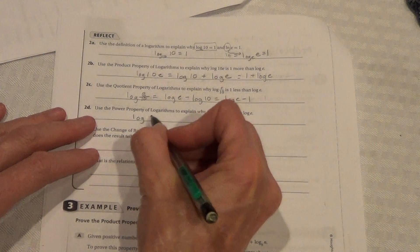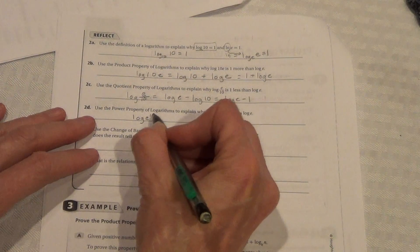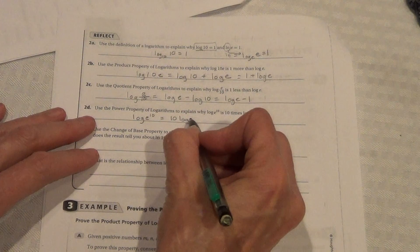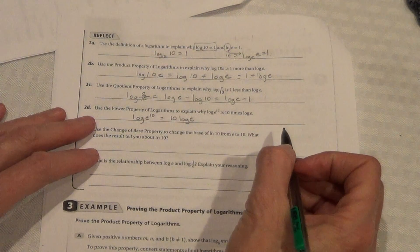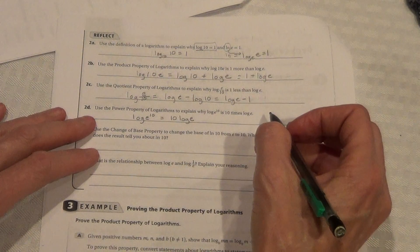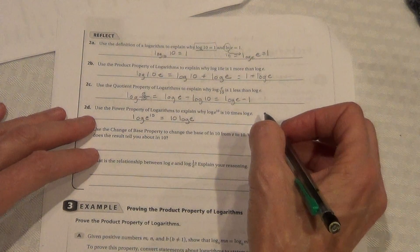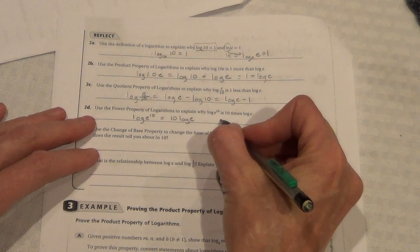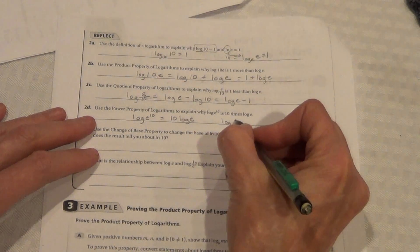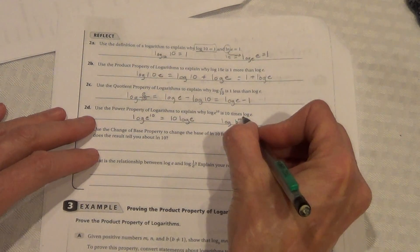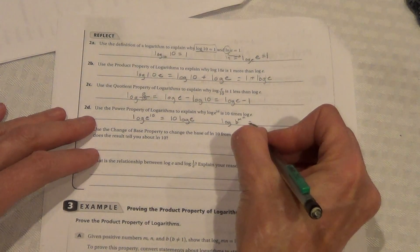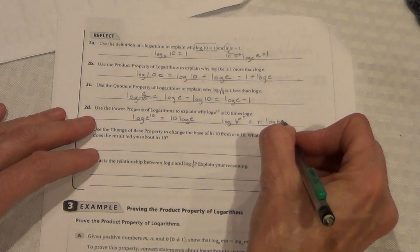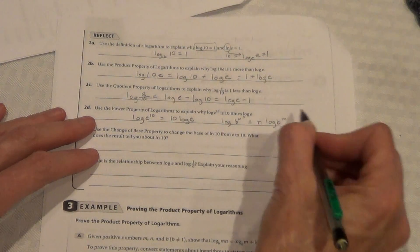Use the power property of logarithms to explain why log e to the 10th is 10 times log e. Log e to the 10 equals 10 log e. On the front, we proved this with the numbers. That it was 10 times log e. The best way that I can show you is with the property. Log b to the m raised to the n equals n log bm.